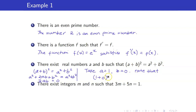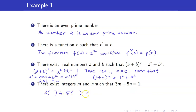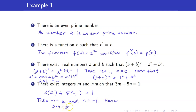1 plus 0 squared is the same as 1 squared plus 0 squared — both are equal to 1. Next, there exist integers m and n such that 3m plus 5n is equal to 1. We can put 2 here and negative 1 here, so we have 6 minus 5, which equals 1. Take m equal to 2 and n equal to negative 1. Hence, 3m plus 5n equals 3 times 2 plus 5 times negative 1, which is exactly equal to 1. In all of these examples, we employed the constructive method.